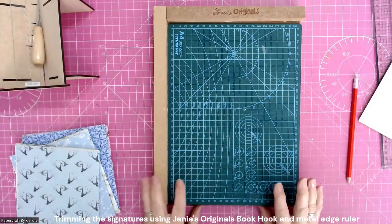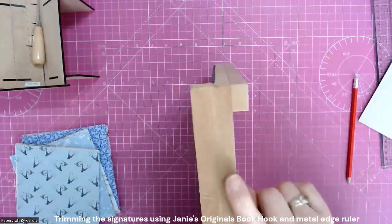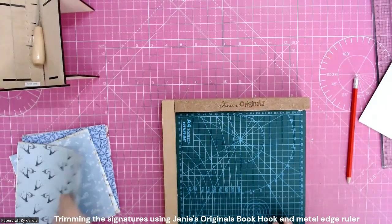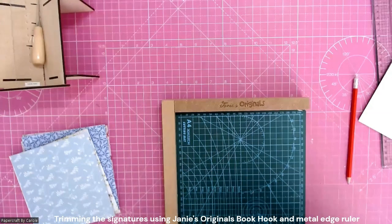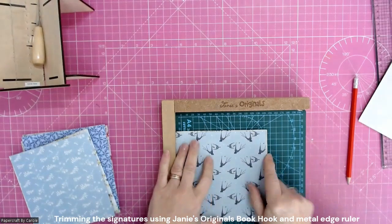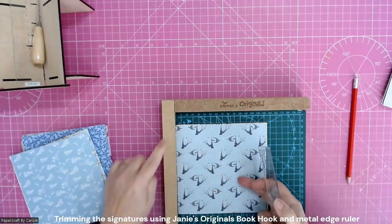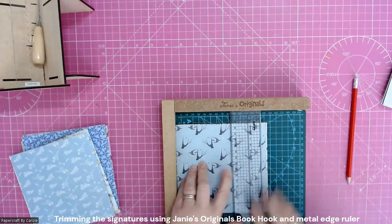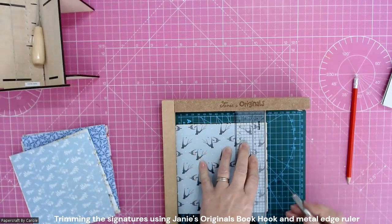To do the cutting I'm using this. This is what's called a book hook from Janie's Originals. You can see it. This bit here hooks over the edge of your desk. You can't actually see it on the edge of my desk, so that's sort of firmly in place. Then what I'm going to do is bring back in, I just need to check where I drew my lines. What I'm doing is I'm putting my signature up against this edge, then I'm making sure that the metal edge of my ruler is where I've drawn my line.